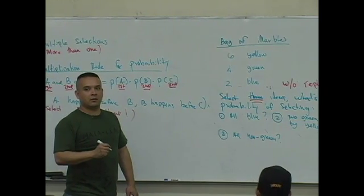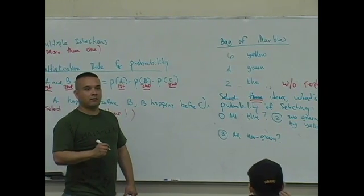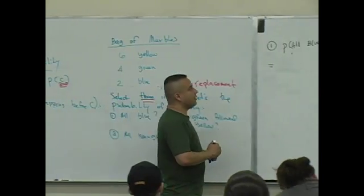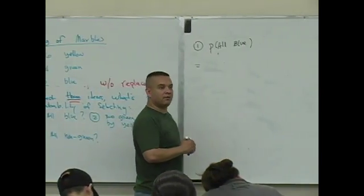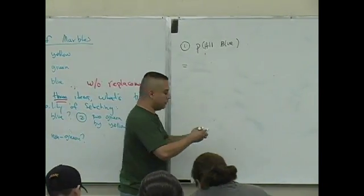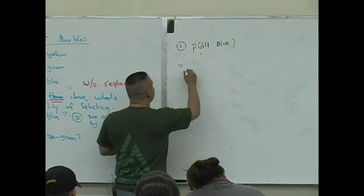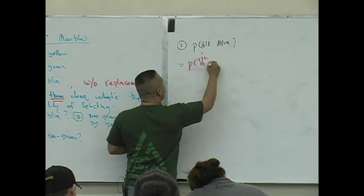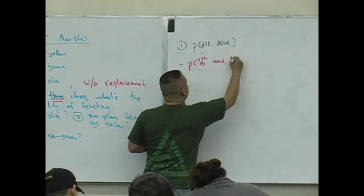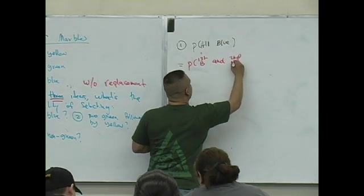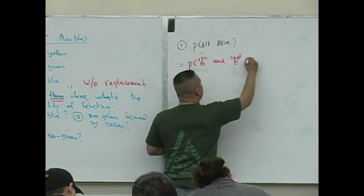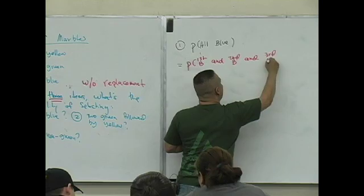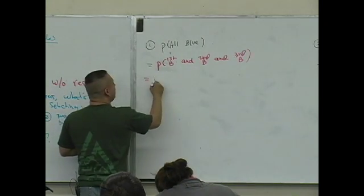You're selecting three. So what does that mean if you're selecting three and they're all blue? Does it mean that the first is blue and what else? The second is blue and what else? The third is blue. Isn't that what's happening if they're all blue?